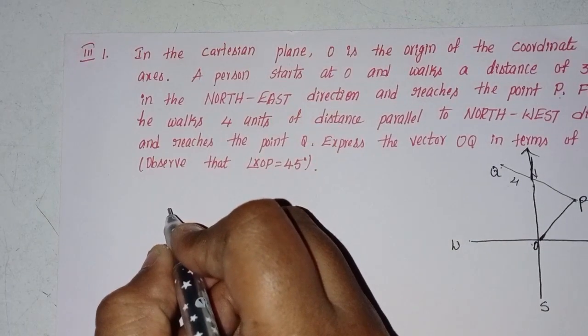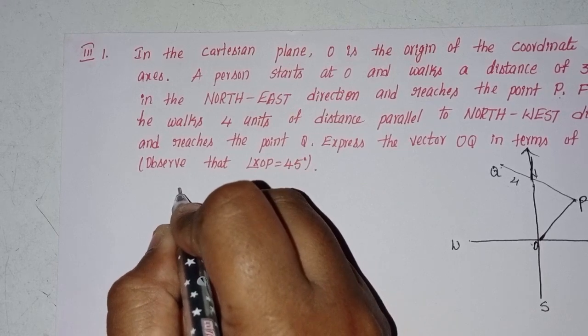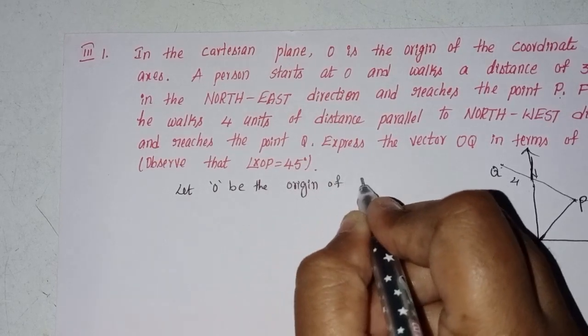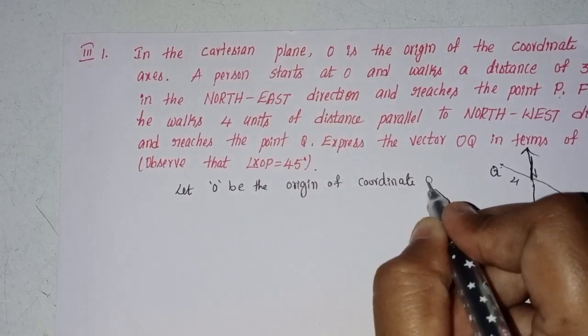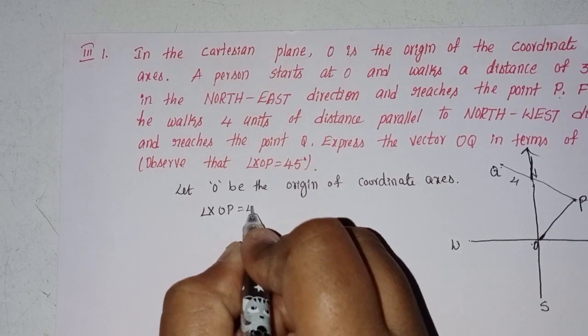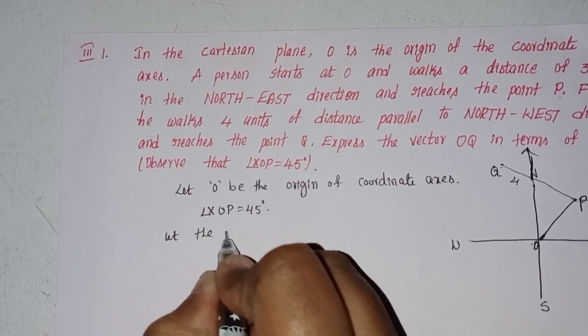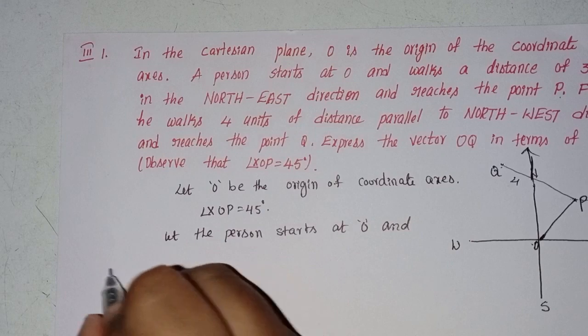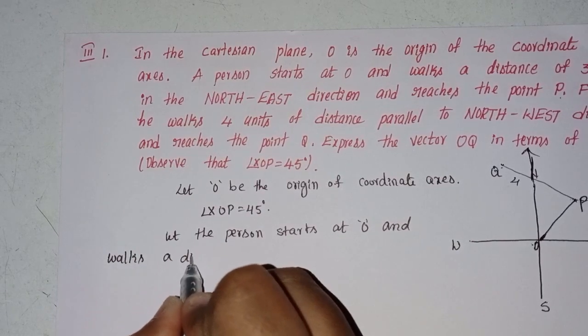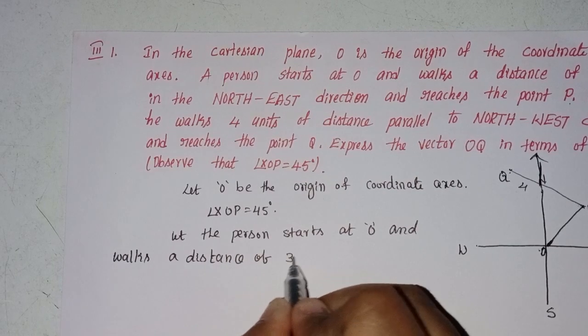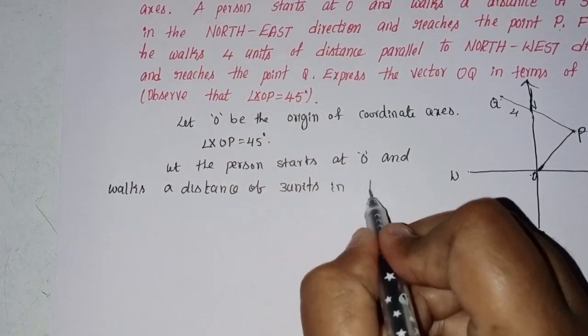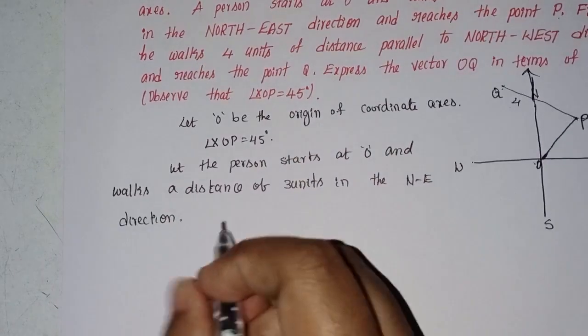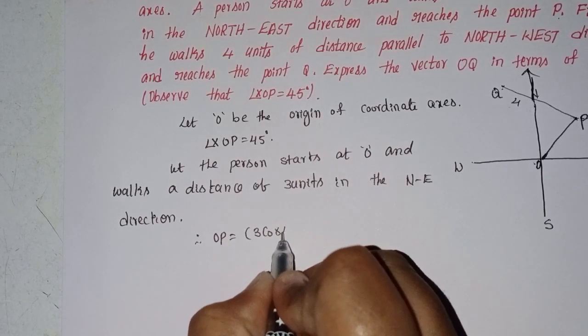Let O be the origin of coordinate axis. Angle XOP equals 45 degrees. Let the person start at O and walk a distance of 3 units in the north-east direction.